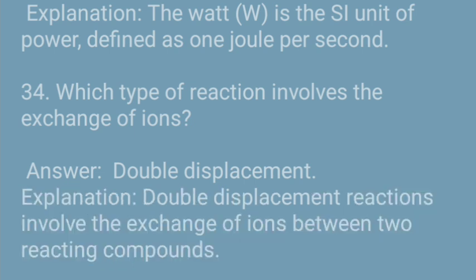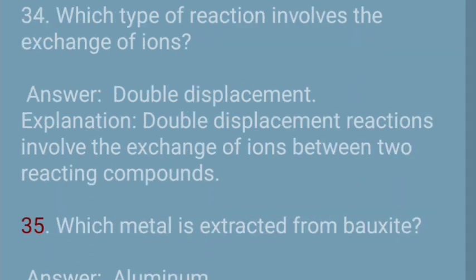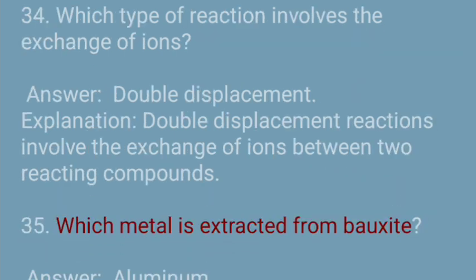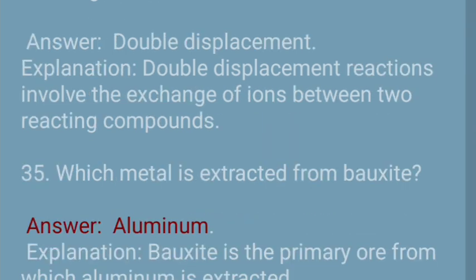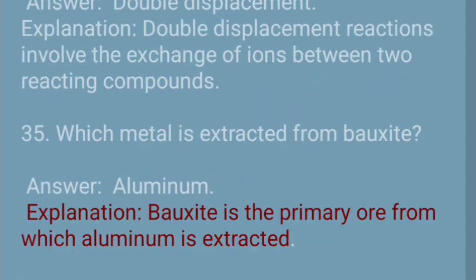Question 35: Which metal is extracted from bauxite? Answer: Aluminum. Explanation: Bauxite is the primary ore from which aluminum is extracted.